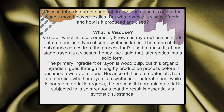The name of this substance comes from the process that's used to make it. At one stage, rayon is a honey-like liquid that later settles into solid form. The primary ingredient of rayon is wood pulp, but this organic ingredient goes through a lengthy production process before it becomes a wearable fabric. Because of these attributes, it's hard to determine whether rayon is synthetic or natural. While the source material is organic, the process it is subjected to turns it into a synthetic substance.